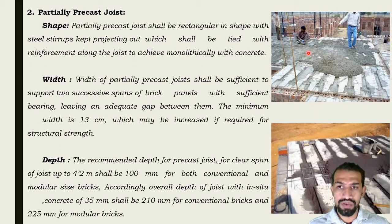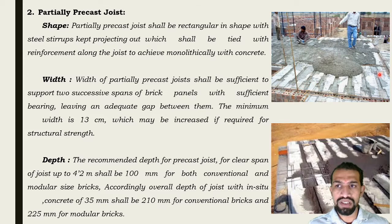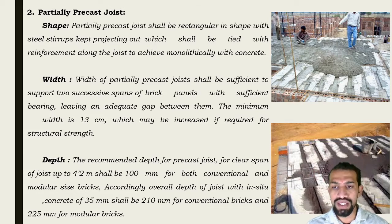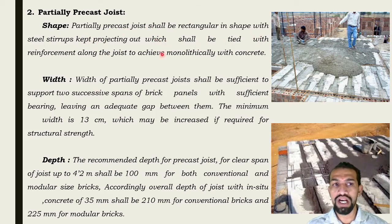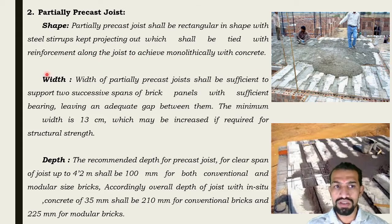For the partially precast joist shape, the joist shall be rectangular in shape with steel stirrups projecting out, which shall be tied with the reinforcement along the joist to achieve monolithic connection with concrete. The width of the partially precast joist shall be sufficient to support two successive spans of brick panels with sufficient bearing, leveling, and adequate gap between them. The minimum width is 13 cm, which may be increased if required for structural strength.